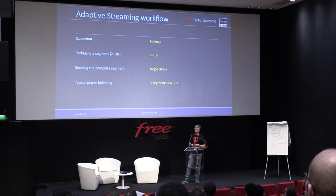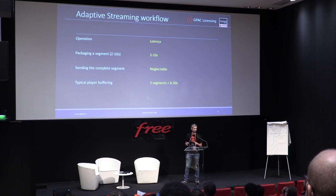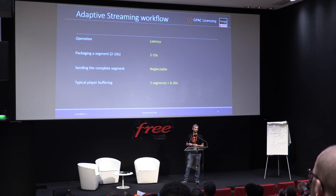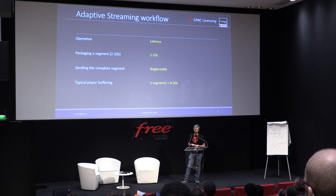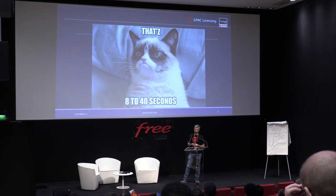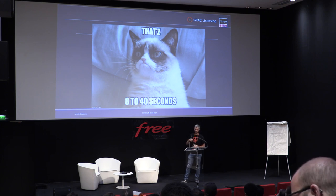Usually, when we talk about MPEG-DASH and adaptive streaming, what happens is that you have an encoder that produces chunks of segments — basically two to ten seconds of data that's being encoded, packaged, and copied on the server — and then you have a player getting the data back. Usually the player buffers three segments. So if you add up the segments, you have eight to forty seconds of latency, and probably you heard that the industry was not happy.